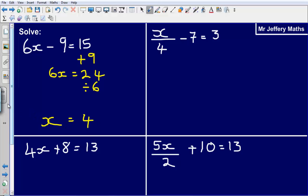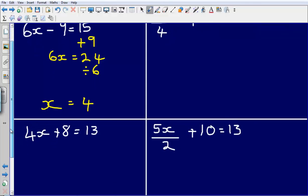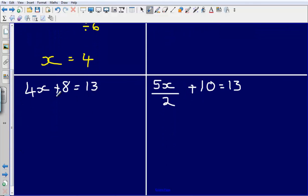Next example, I've got 4x plus 8 is equal to 13. The first thing that I'm going to do is I'm going to undo this plus 8. I'm going to undo the plus 8 by doing the opposite of it which is minus 8. So that leaves me with 4x is equal to 13 minus 8 which gives me an answer of 5.